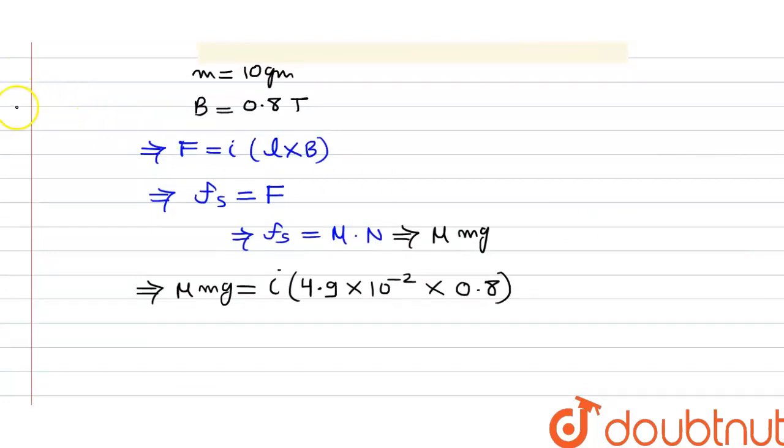So we all know that as current I is flowing in the circuit, current I is given by emf of the battery divided by resistance in the circuit. So we know that emf of the battery is 6 volt.